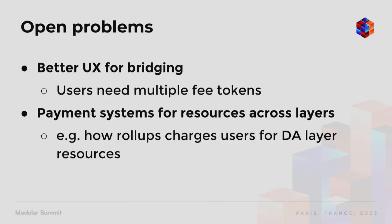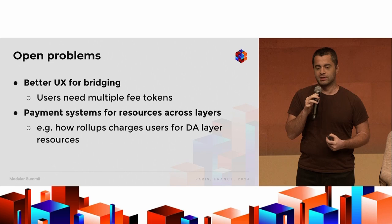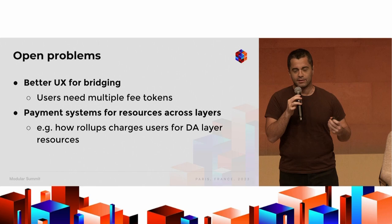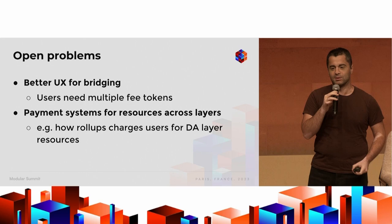One of the open problems is UX for bridging. There's still a lot of work to improve UX in bridging, especially in the Cosmos ecosystem — users need multiple fee tokens to bridge across chains. There are various people working on that, like Skip. You can go to ibc.fun, which is a website that has a demo of this.